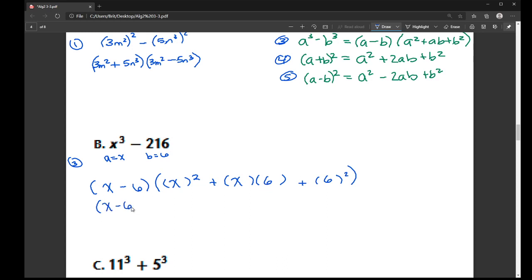So now I'm just kind of cleaning it up. So x minus 6 is fine. x squared, I don't need parentheses. x times 6 is 6x. And then here, 6 squared is 36. So then I would always double-check to see if this is factorable. I don't believe it is. No, it's not. So this is my final factored form.